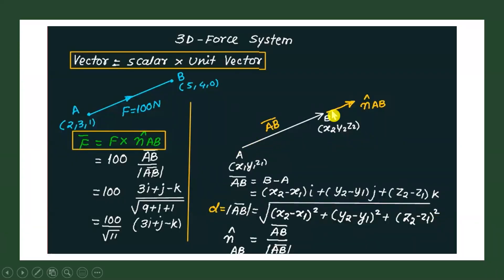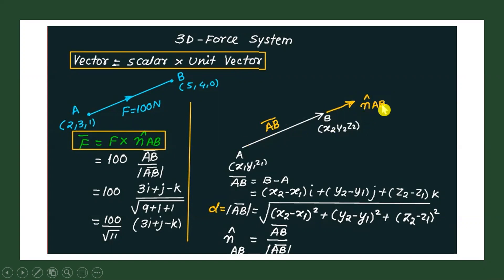Since the line passes through points A and B and is not parallel to any axis, the unit vector along the line of action is n̂_AB. If it were parallel to the x-axis you would write scalar × î; if parallel to y-axis, scalar × ĵ; if parallel to z-axis, scalar × k̂. But since it is not parallel to any axis, the unit vector along the passing-through points is n̂_AB, and the formula for n̂_AB is AB vector divided by the modulus of AB vector.